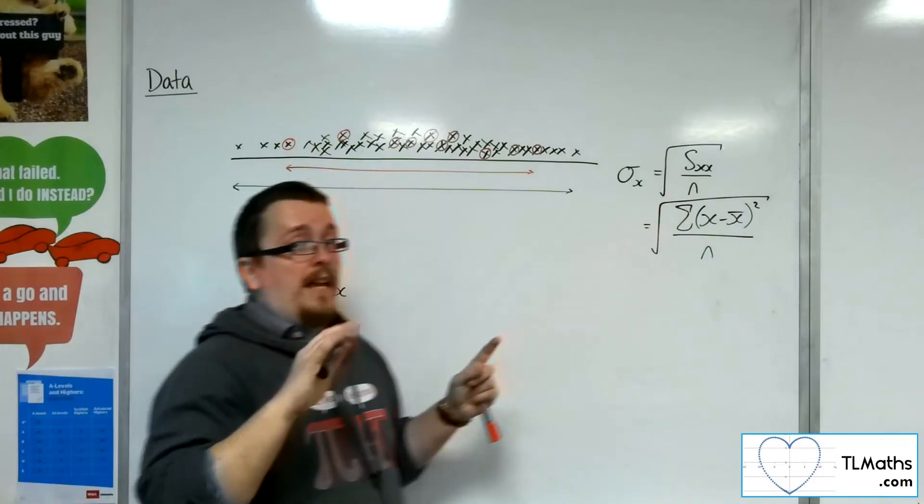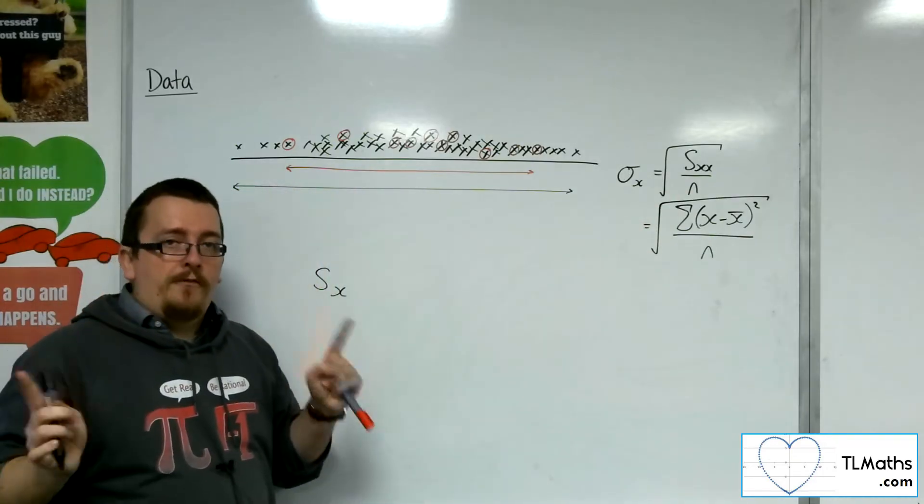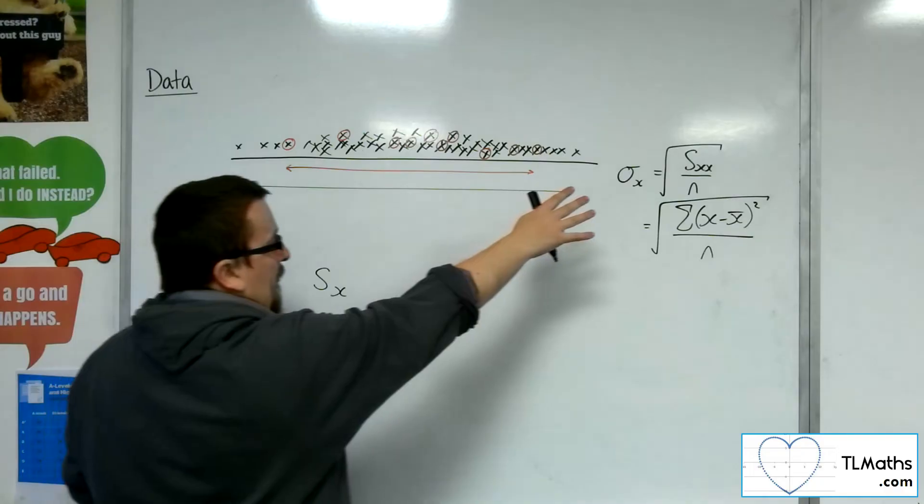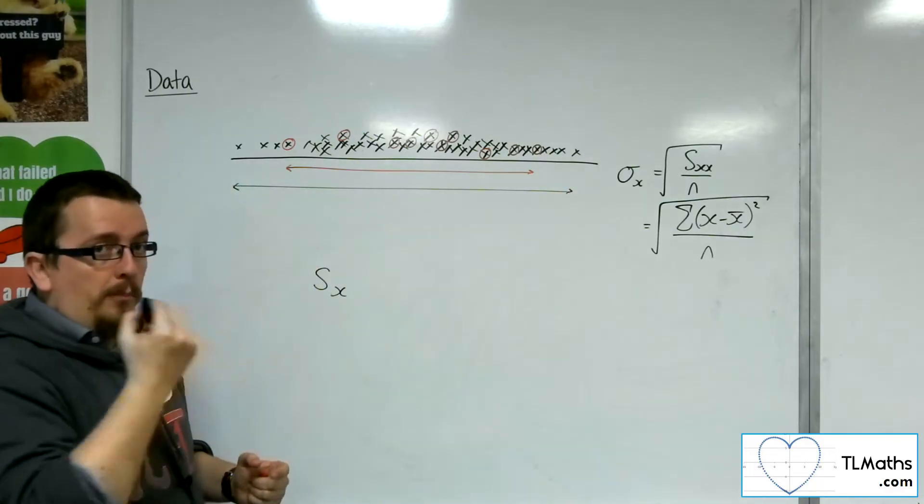Now, we've got sx and sxx here. They are two very different things. sxx is the sum of the squares. sx is the sample standard deviation.